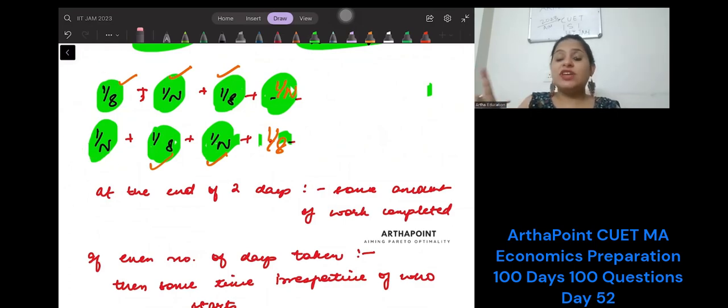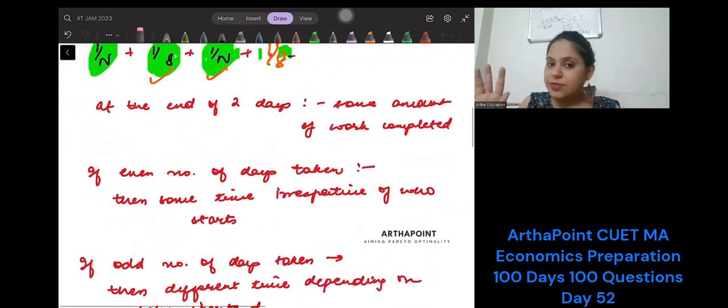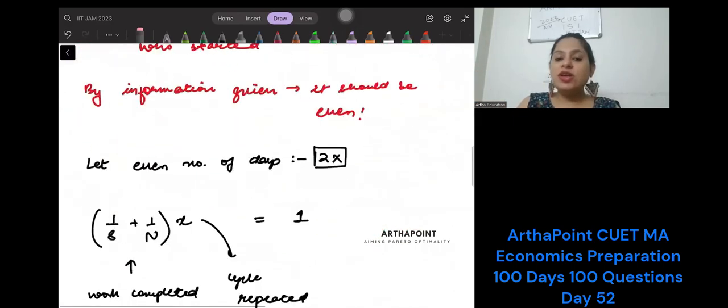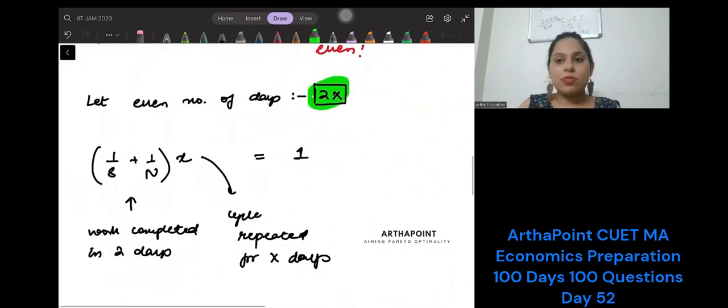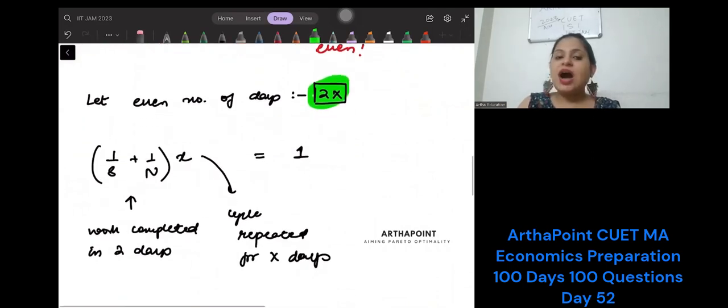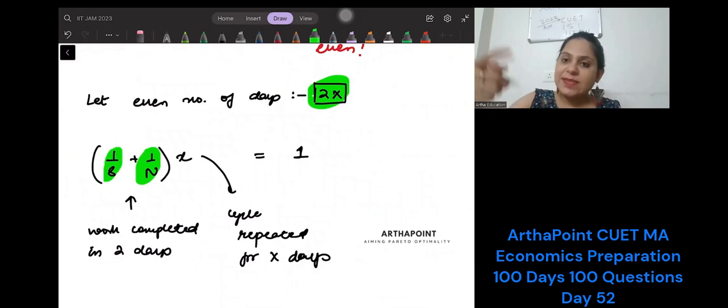they are taking even number of days to complete the job. Is this clear? Okay, now suppose the number of days—because it is even, so I will do 2 into X. So suppose the number of days they take to complete the job is 2X. But how much work will be completed in 2 days? 1/8 + 1/N. And then this cycle keeps repeating itself for X days, right? So into X—this is how many times the cycle will get repeated. Every 2 days they complete this